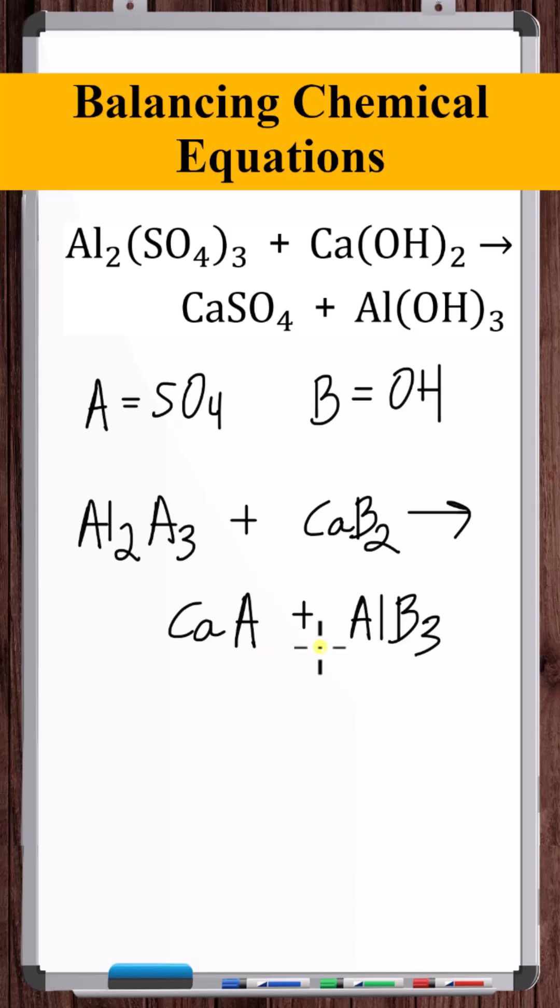So now, next, we want to look for elements that are contained in just one substance on the left side of the equation, as well as just one substance on the right side of the equation. So here in the reactant side, we can see we've got aluminum just in one substance. And also on the product side, we have aluminum just in one substance. So what that allows us to do is we can relate these two coefficients. It's going to have to be the case that if this coefficient is x, then this coefficient is going to have to be 2x. This coefficient has to be twice this coefficient in order for the aluminums to balance.